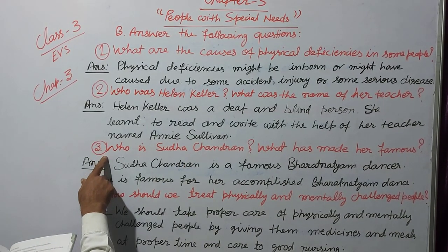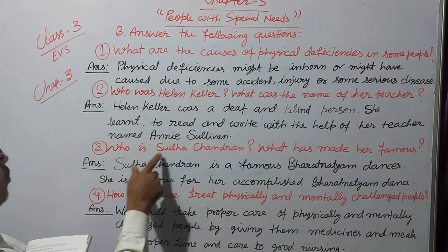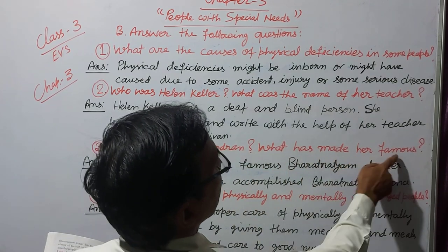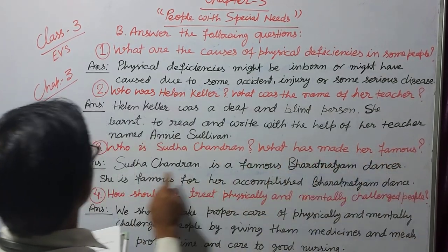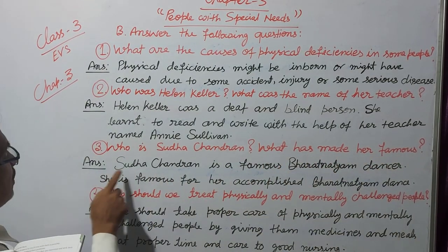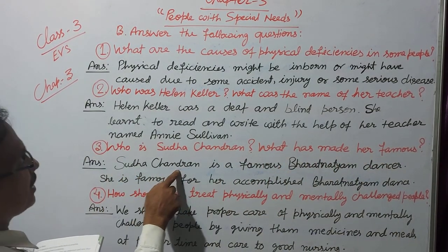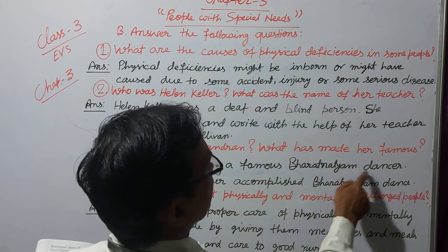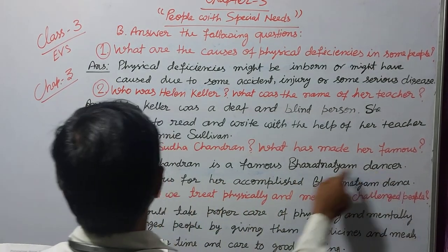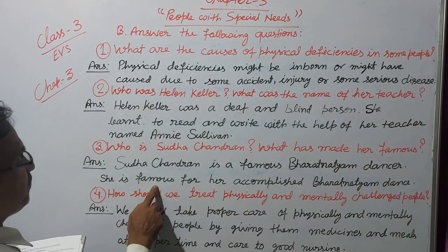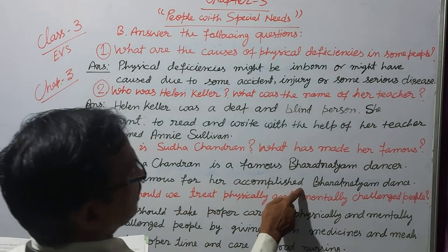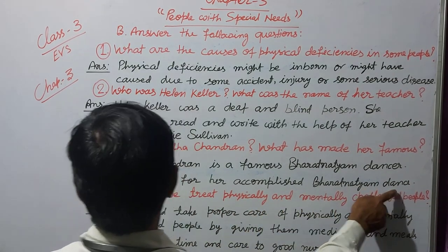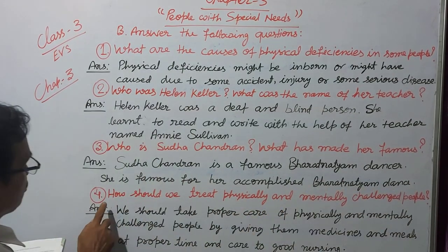Question number 3: Who is Sudha Chandran? What has made her famous? Answer: Sudha Chandran is a famous Bharatanatyam dancer. She is famous for her accomplished Bharatanatyam dance performances.